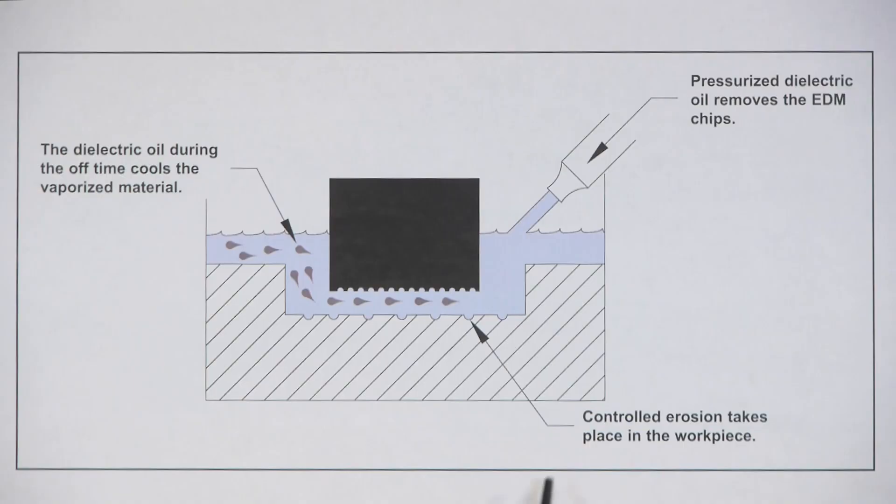In this diagram, we see controlled erosion takes place in the workpiece. And here we see the dielectric oil during the off time cools the vaporized material. So this is the off time. You have to get rid of these chips. And the pressurized dielectric oil removes the EDM chips. Now there's a number of ways of removing the chips here.